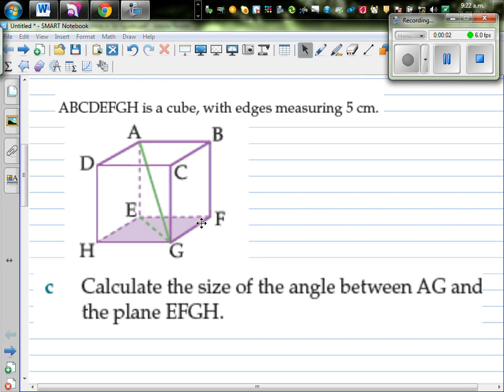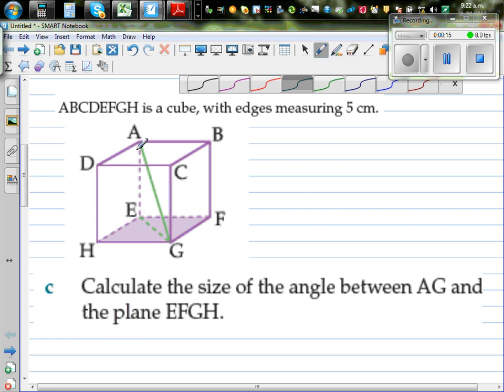This is a cube measuring 5 centimeters. We want to find and calculate the size of the angle AG makes with the plane EFGH. So this is the plane EFGH, that's the floor, and we want to find this angle.